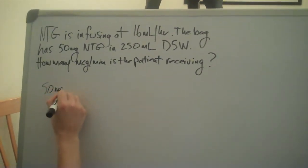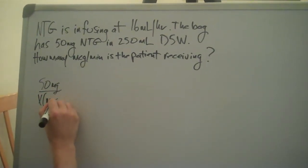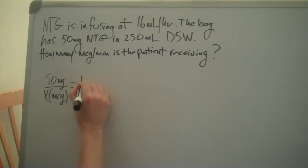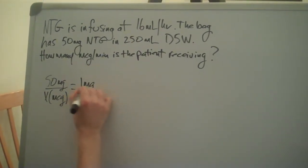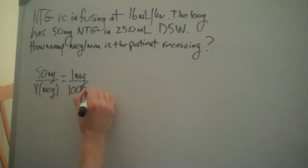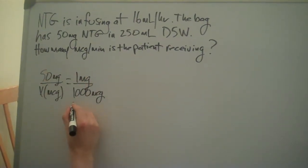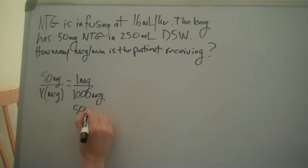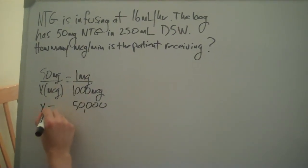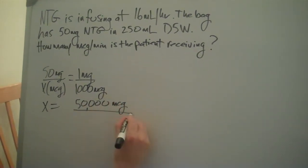So we have 50 milligrams to micrograms. So we have 50. Our conversion factor, one milligram is equivalent to a thousand micrograms. We're going to cross multiply. Cross multiply, x equals 50,000 micrograms.